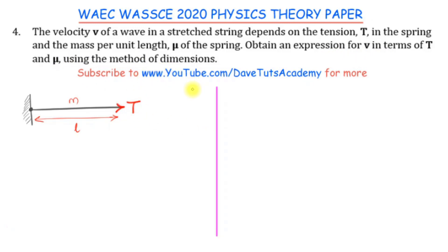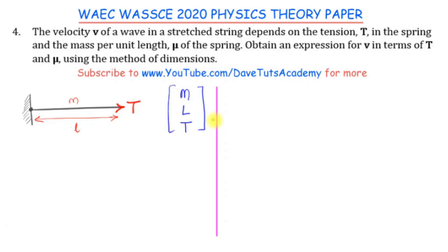The method of dimensions means that we need to go back to the base units of the SI system: mass, denoted as M; length, denoted as L; and time, denoted as T. We are going to make use of these base units to actually solve this question.